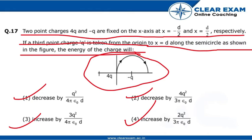And the final energy can be calculated as 1/(4πε₀) times [4Q²/(3D/2) - Q²/(D/2)]. Now to calculate the energy difference, we will take subtraction of the final energy and the initial energy.